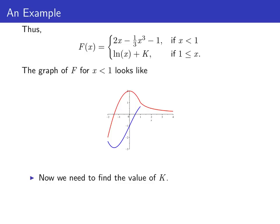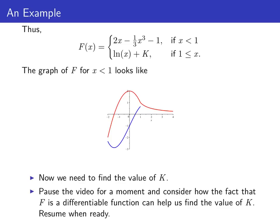This tells us that big F of x is 2x minus 1 third x cubed minus 1 if x is less than 1, and the natural log of x plus k if x is bigger than or equal to 1. On the interval x less than 1, the graph of F looks like the blue curve drawn. To finish finding big F, we need to find the value of constant k, using the fact that big F is a differentiable function.